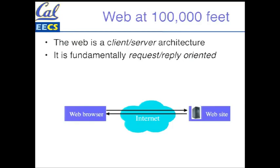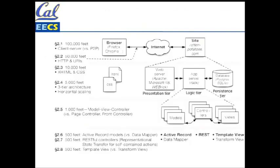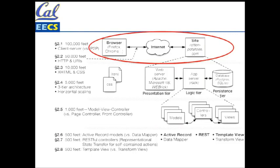This picture is taken straight out of the book. We've got a browser like Firefox or Chrome, and a site like Rotten Potatoes — the instructional example developed through the book, a simple version of Rotten Tomatoes. When we say it's a client-server architecture, whenever you hear the word architecture, a bell should go off: by choosing an architecture, you've rejected an alternative. Other architectures are possible and the web is not those.